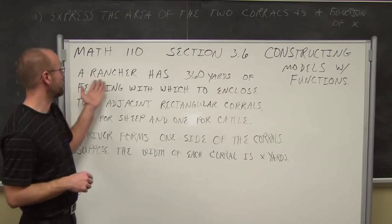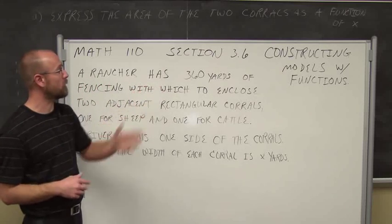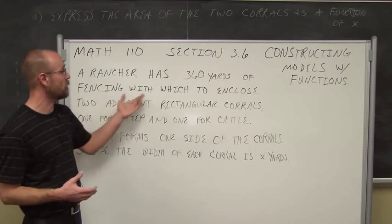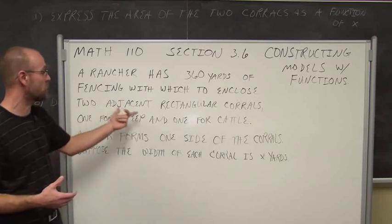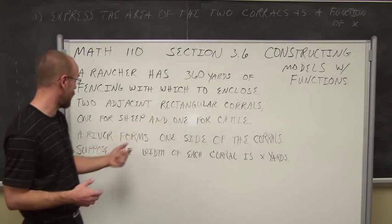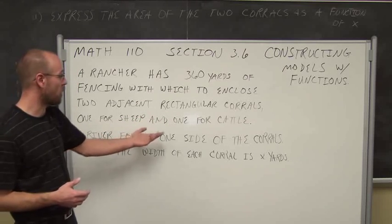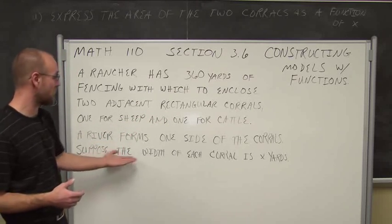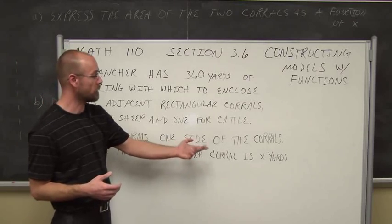Here's an example: a rancher has 360 yards of fencing with which to enclose two adjacent rectangular corrals, one for sheep and one for cattle. A river forms one side of the corrals. Suppose that the width of each corral is x yards.